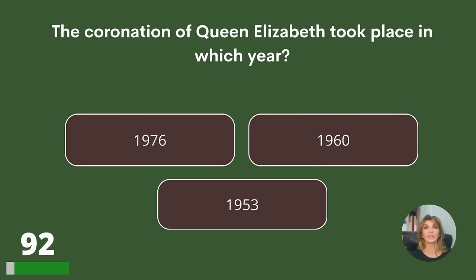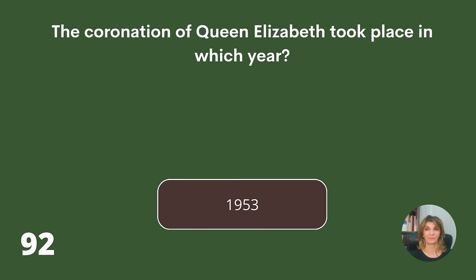The coronation of Queen Elizabeth took place in which year? 1976, 1960, or 1953? Answer: 1953.